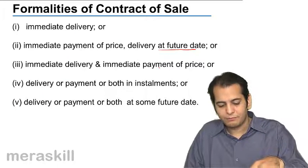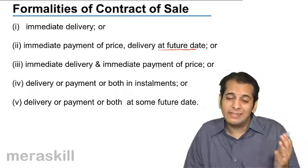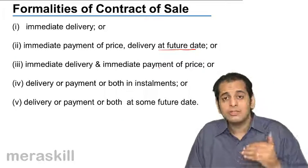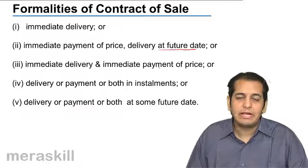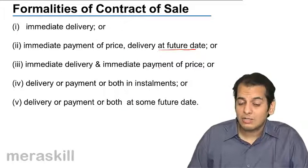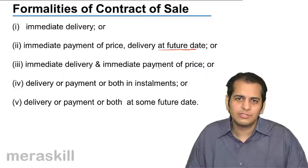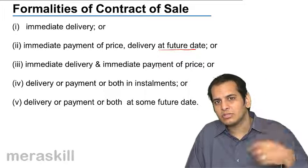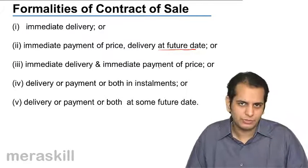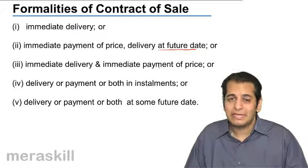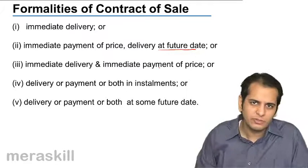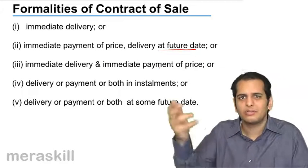The fourth formality is either the delivery or the payment is in installments. We have learned that electronics, cell phones, cars, and bikes are purchased in installments — that is, payment is done on a monthly or quarterly basis. We call it an installment purchase, so payment is made in installments. At the same time, delivery can also be made in installments. However, you cannot deliver a TV, a car, or a bike in installments.